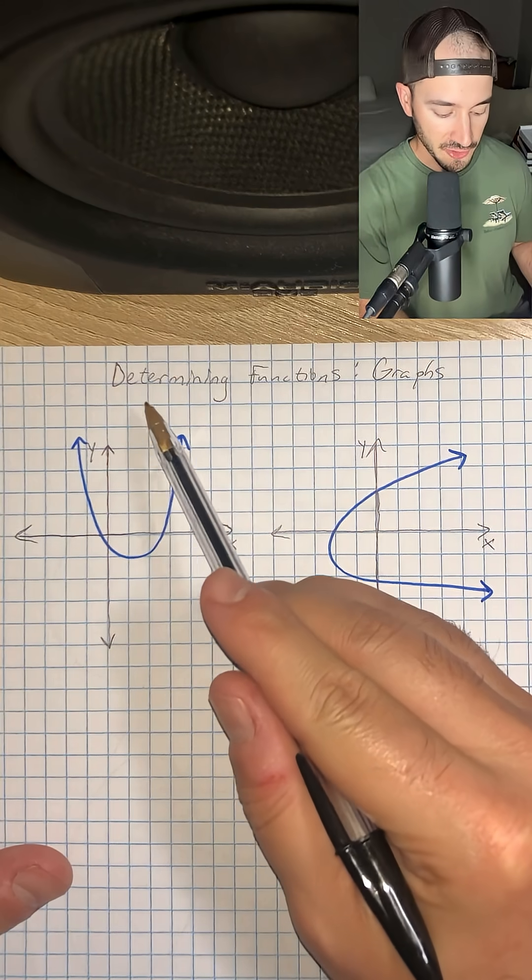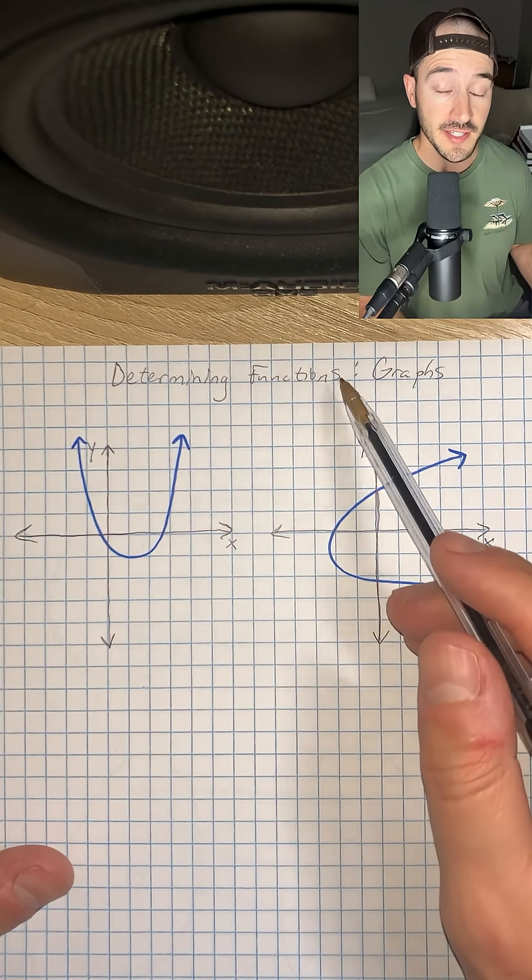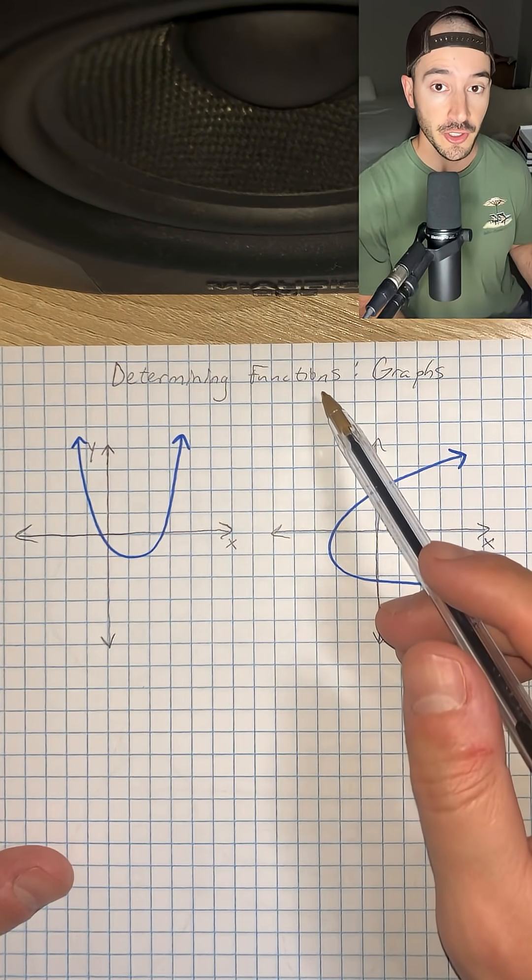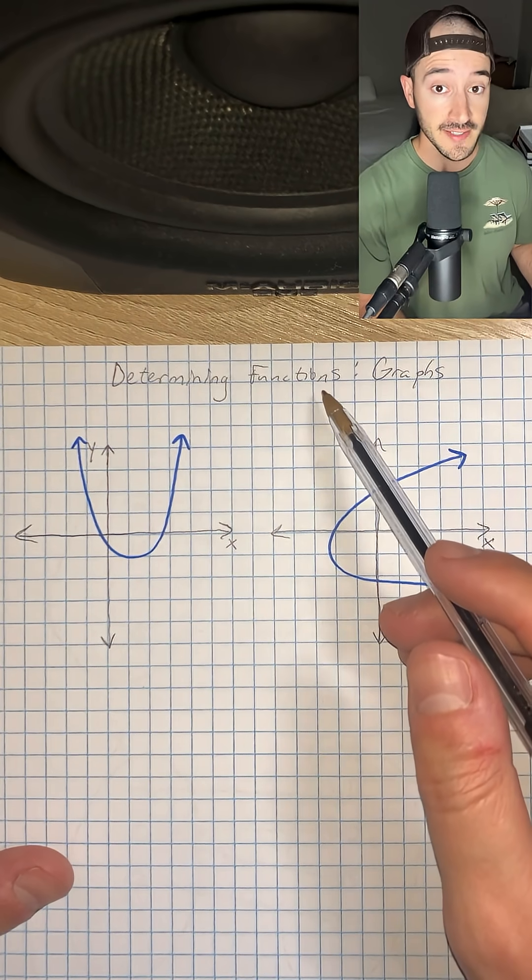This is everything you need to know for 8th grade math, part 6. We're talking about determining functions on graphs, and the way that we can tell if a line on a graph is a function is by using the vertical line test.